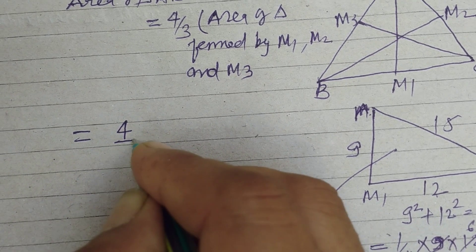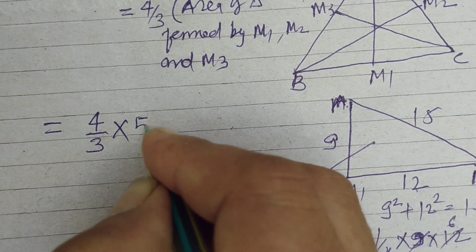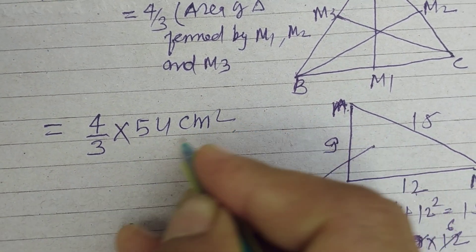So 4 by 3, we have got here, the area of the triangle, which is 54 cm square.